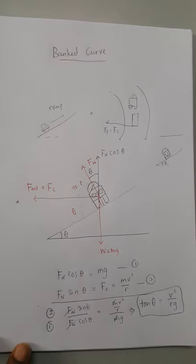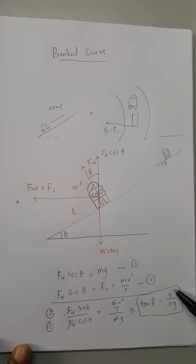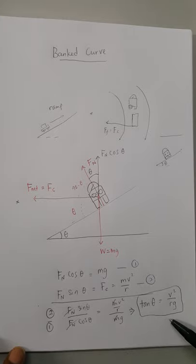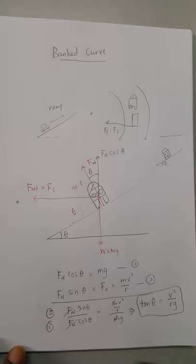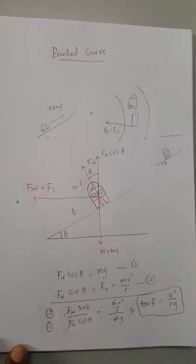So if you know the bank angle, and gravity is constant, and the radius of the curve or roundabout is known, you can find the speed at which the car won't skid. That is the use of the banked curve equation. Try to work through this yourself, and if you have any problems, post your questions in the horizontal circular motion section. Have a nice day!